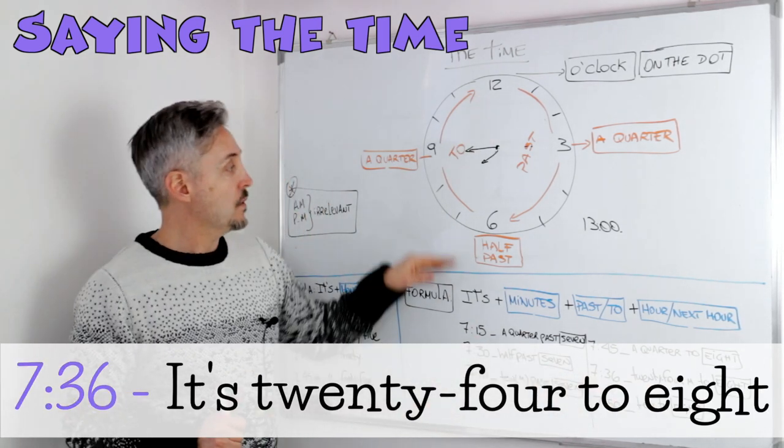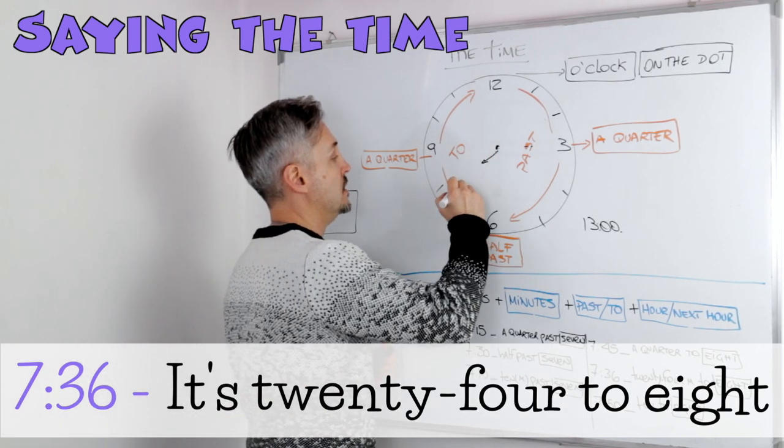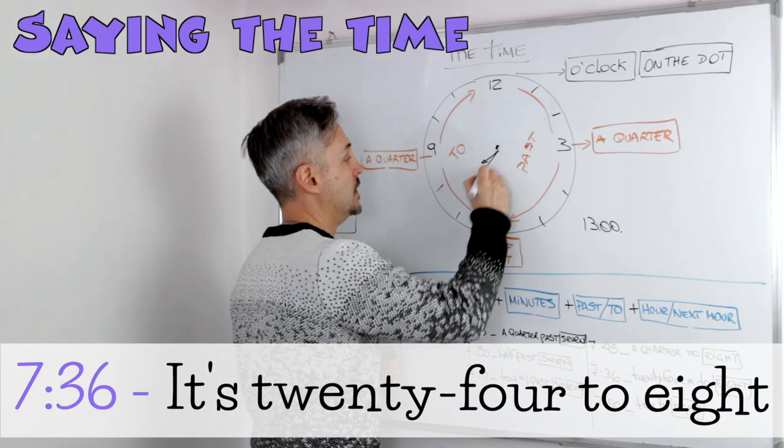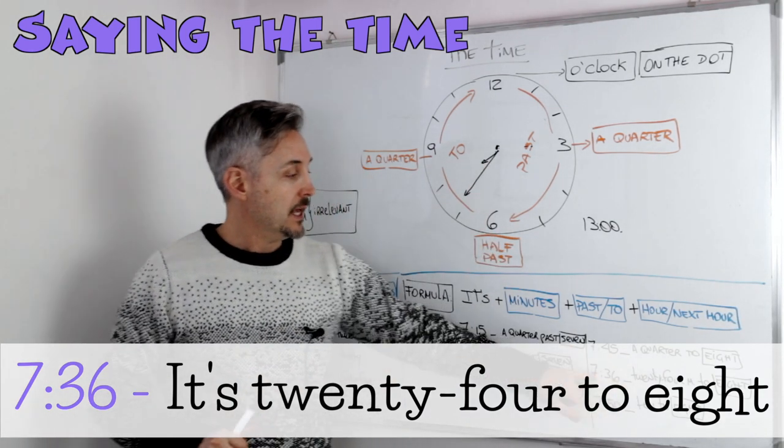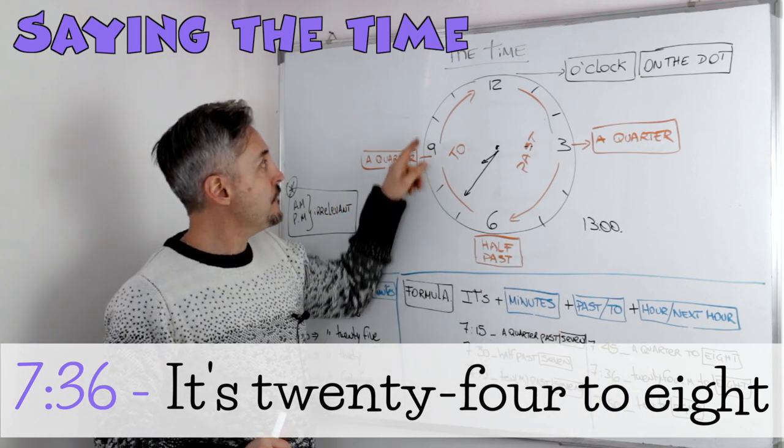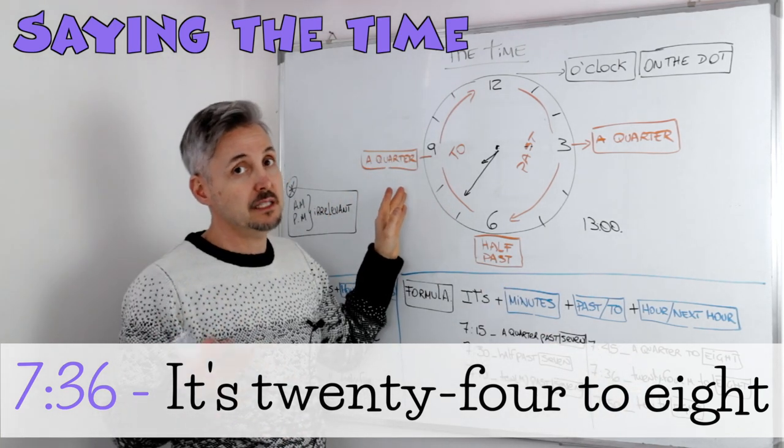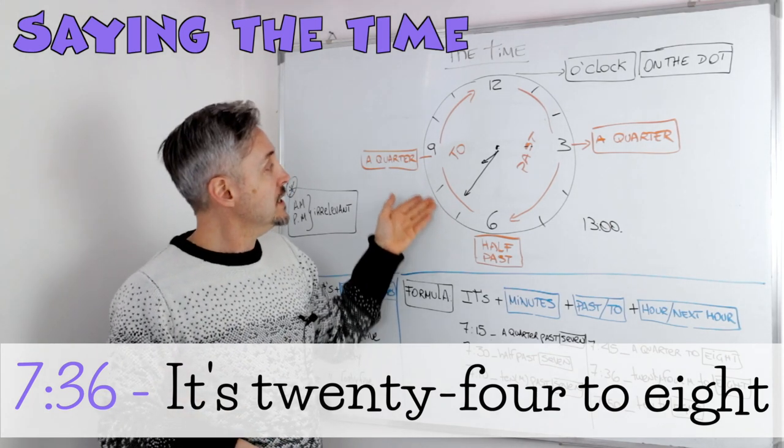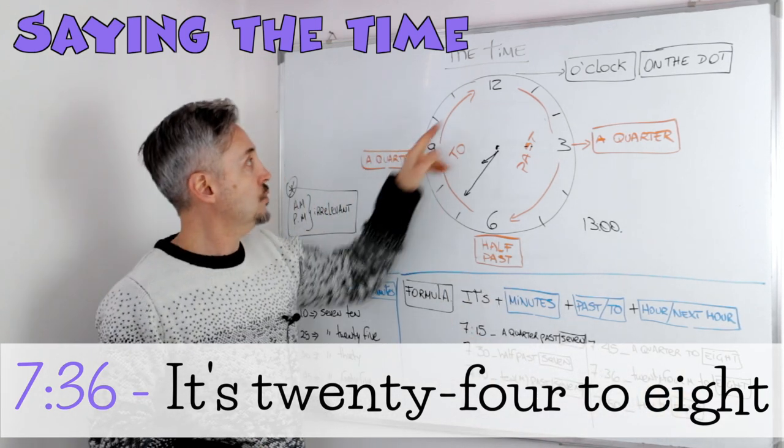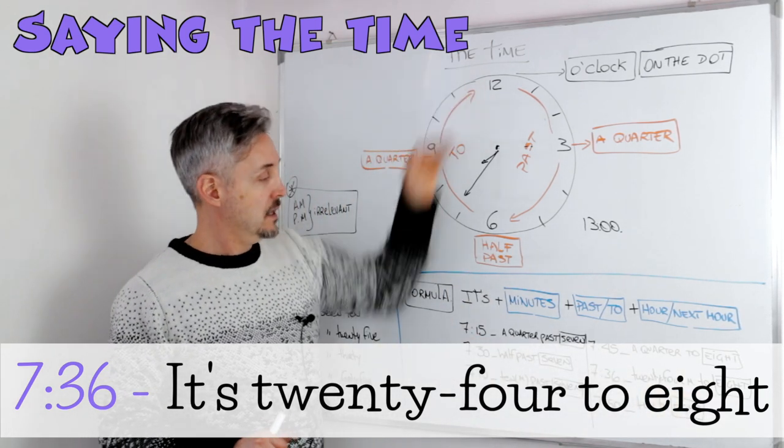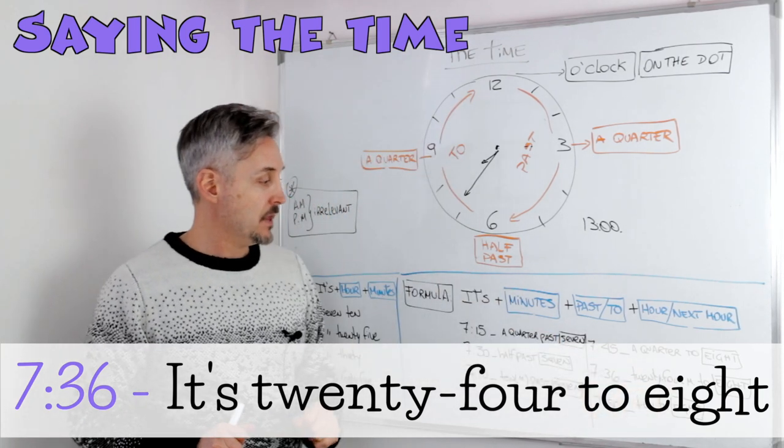Let's look at another example. 7:36. So it's, let's just draw, right, like there, more or less, is 24, 24 minutes, you can add minutes if you want, if not you can leave it, 24 minutes to eight, to eight o'clock.